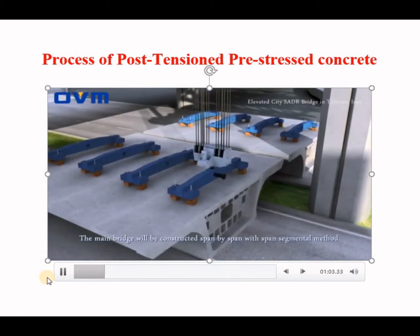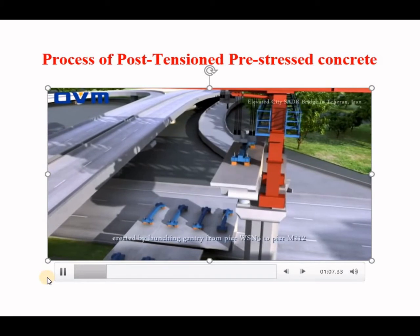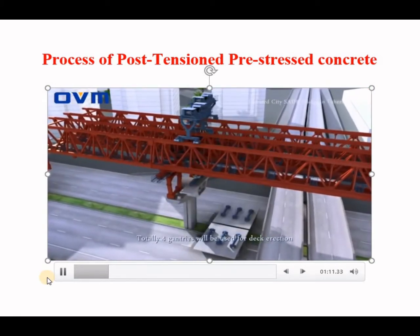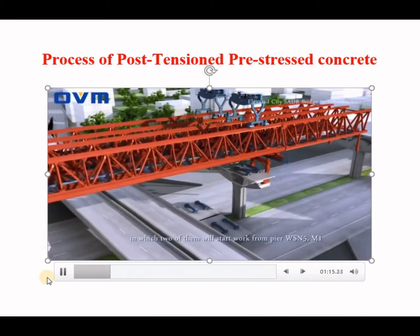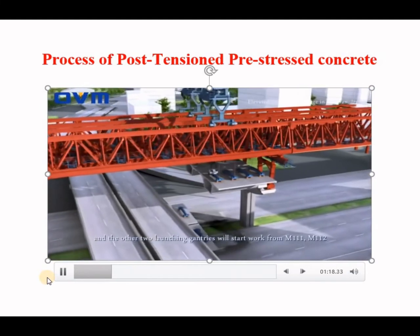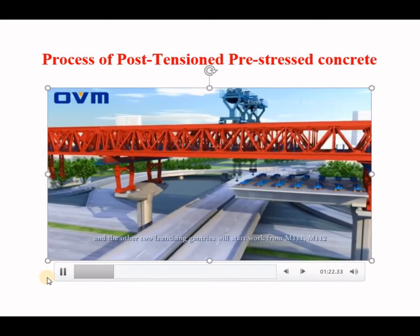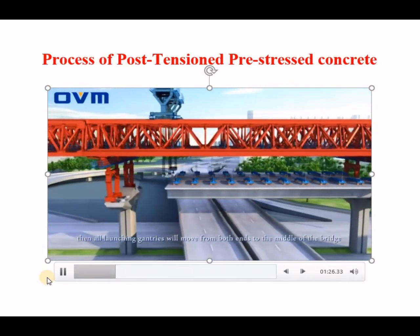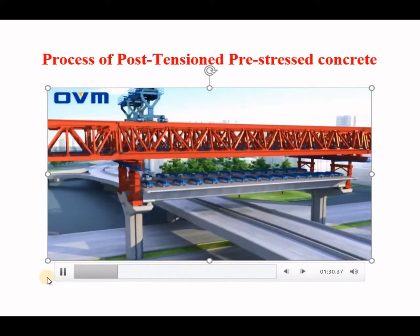The deck will be erected by launching gantry, from pier WSN-5 to pier M1-12. Totally four gantries will be used for deck erection, in which two will start work from pier WSN-5 M1, and the other two launching gantries will start from M111 to M1-12. Then all launching gantries will move from both ends to the middle of the bridge. Finally, 111 spans of deck will be erected.